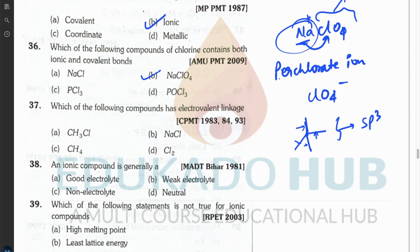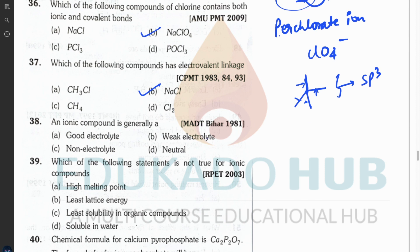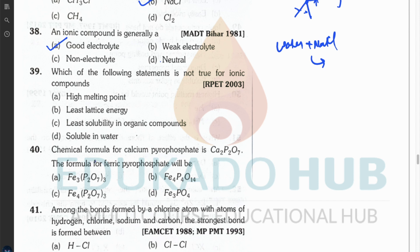Question thirty-seven: which compound has electrovalent linkage? The answer is B — NaBr, similar to the earlier question. Question thirty-eight: an ionic compound is generally a good electrolyte. An electrolyte is any liquid or semi-liquid having free movable ions that help in conduction of electricity. Adding NaCl to water produces free movable Na⁺ and Cl⁻ ions. Ionic compounds are not weak or non-electrolytes — they are good electrolytes.